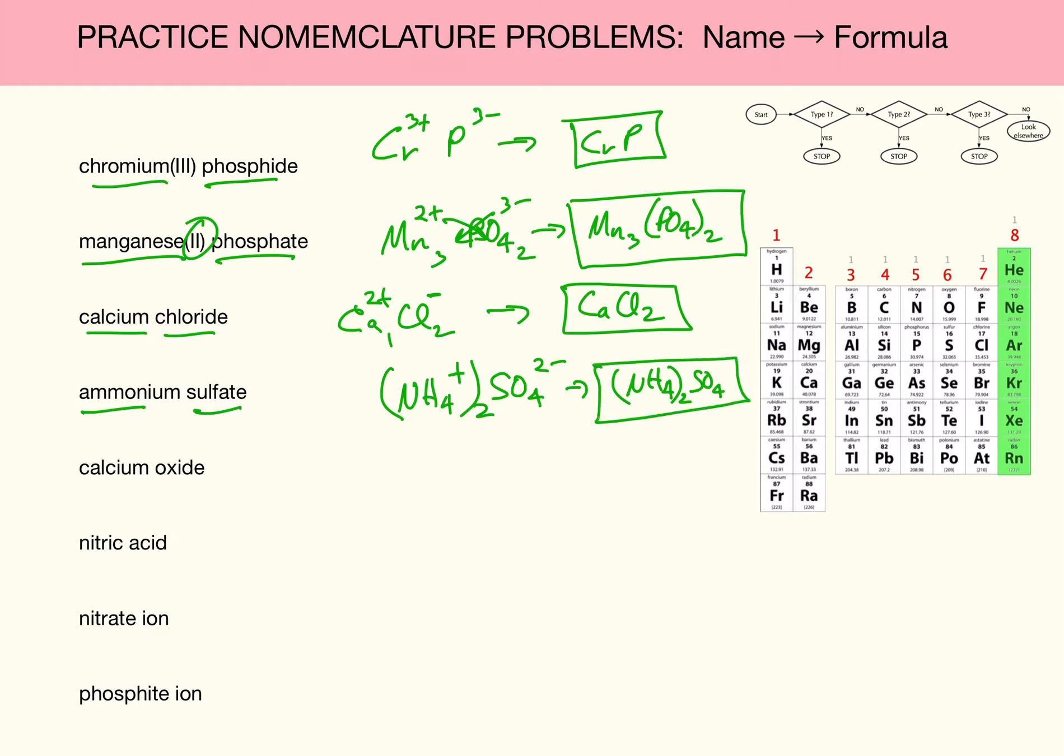Next, calcium oxide. Calcium oxygen. Calcium has a charge of +2. It's in group 2 again. Oxygen has a charge of -2 as usual. And I can see that's charge neutral. So the formula for calcium oxide is just CaO.